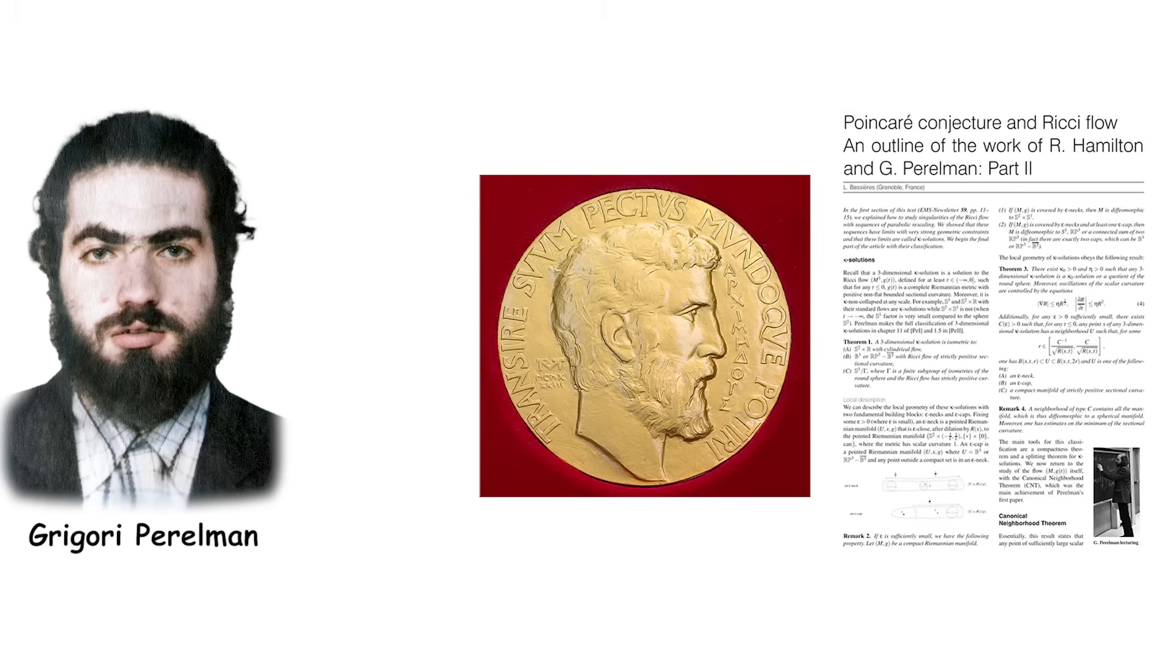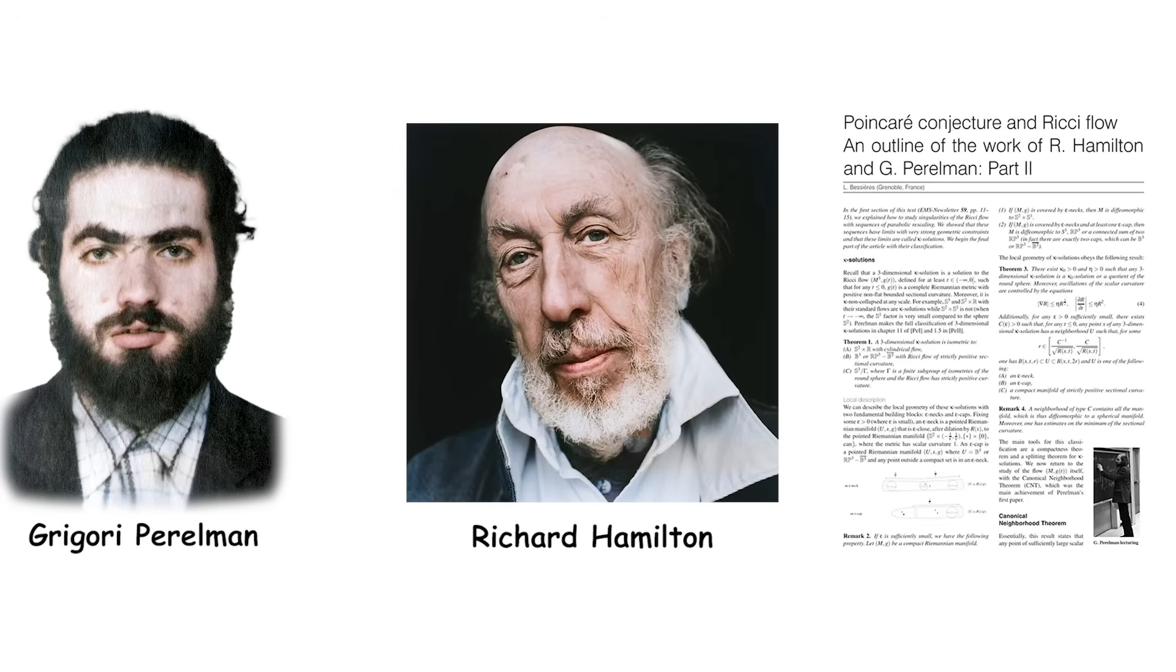Perelman was also offered the Fields Medal, which is like the Nobel Prize for math. But Perelman didn't want the prizes. He said he did his work because he loves math, not to win money or awards. Perelman also thought that Richard Hamilton should get some of the credit too, as Hamilton had done important work that helped Perelman solve the problem.